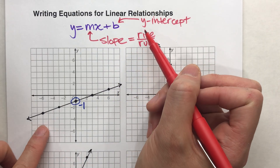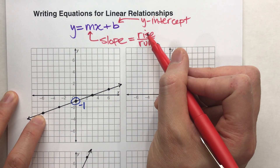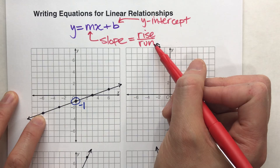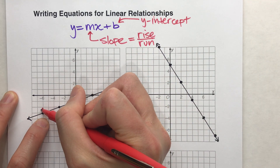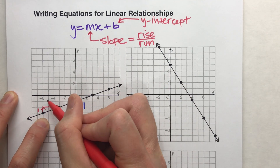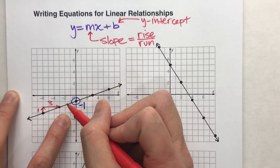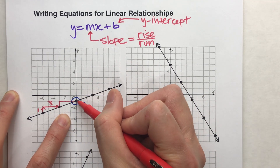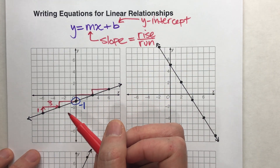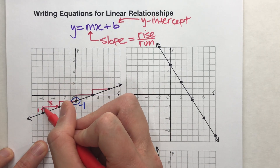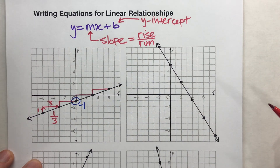Next step, I need the slope. So I need to pick any two points — I'll pick these two. Moving from left to right, I need to figure out how much up and how much to the right I have to go. That's what rise over run means. From here to here, I have to go up 1 unit and to the right 3 units. It doesn't matter which two points I pick — I'll always have to go up 1, right 3. So rise 1, run 3, meaning my slope is 1 over 3, or one-third.